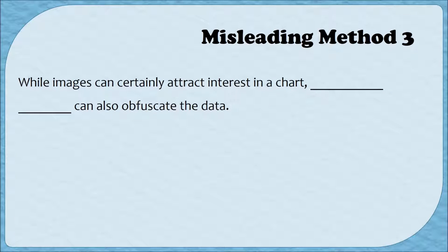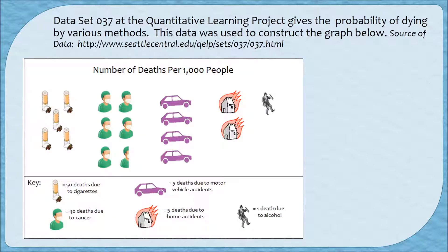The third way to mislead is basically when you're trying to make a graph more interesting, but the techniques you use get in the way. While images can certainly attract interest in a chart, interfering graphics can also obfuscate or confuse the data — they can kind of hide what the data are saying. Let's look at a pictograph made specifically with this in mind. Data set 37 at the Quantitative Learning Project gives the probability of dying by various methods, and this data was used to construct the graph below.